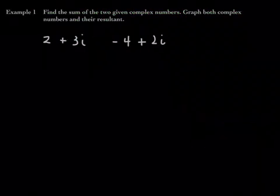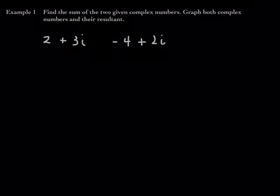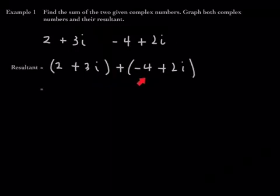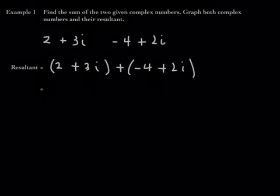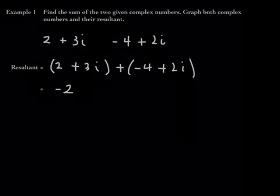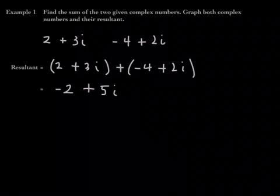Example 1: Find the sum of the two given complex numbers and graph both numbers and their resultant. The sum of two complex numbers is called the resultant. To find the resultant, add the two complex numbers together by adding like parts. Add the real parts — 2 and negative 4 — then add the imaginary parts — 3 and 2. So 2 plus negative 4 is negative 2, and 3 plus 2 is 5. The resultant is negative 2 plus 5i, which is the sum of the two vectors.